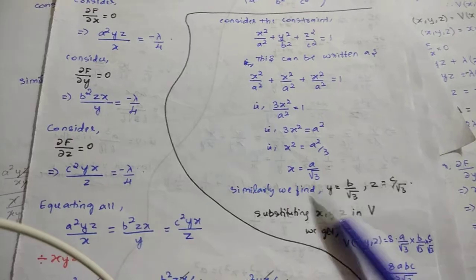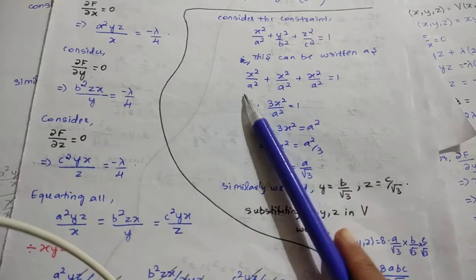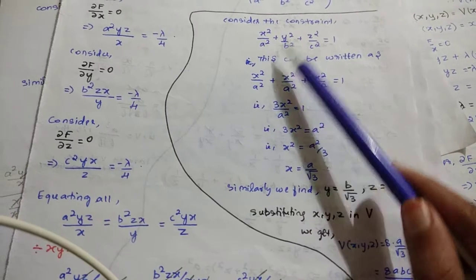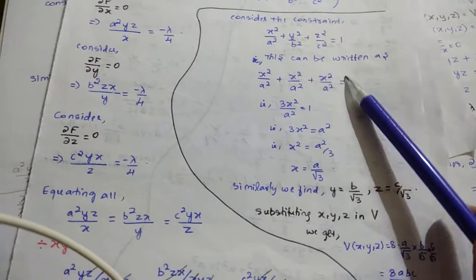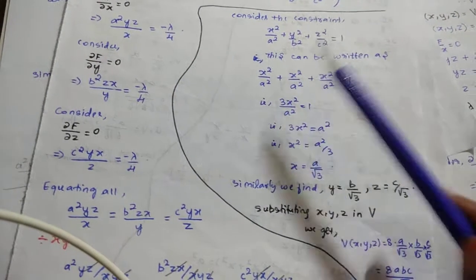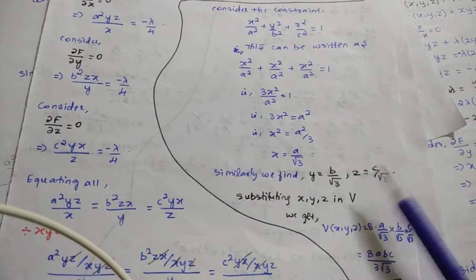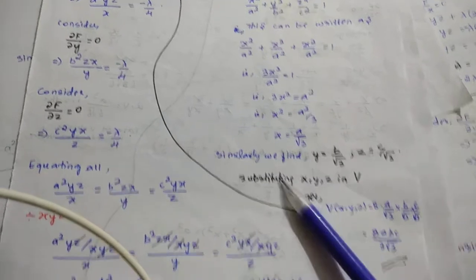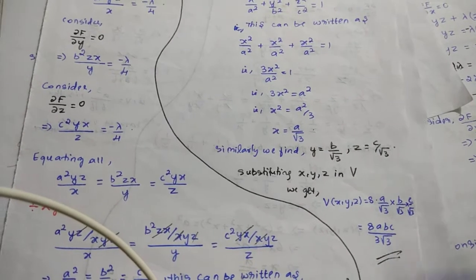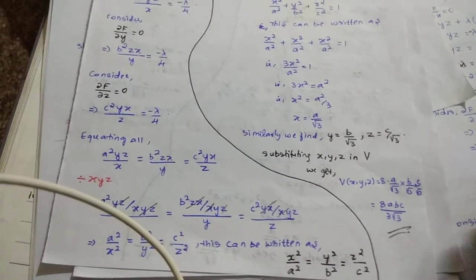Similarly, substituting y²/b² for all three terms gives y = b/√3, and substituting z²/c² gives z = c/√3. Substituting these values of x, y, z into the volume formula V = 8xyz, we get the maximum volume of the parallelepiped. This is how the problem comes to an end.